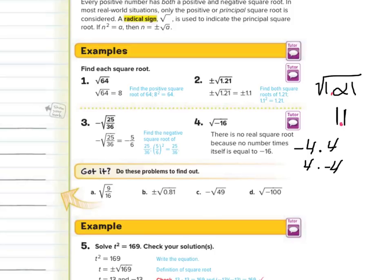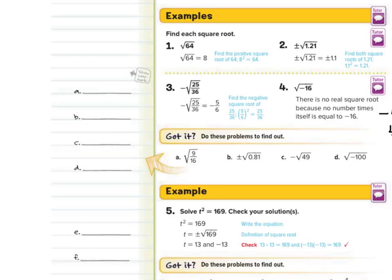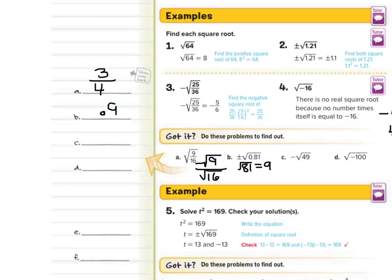Now, what about our got-it questions? We have the square root of 9 sixteenths. Let's take the square root of 9 over the square root of 16. The square root of 9 is 3, the square root of 16 is 4, so the square root of 9 sixteenths is 3 fourths. Now we have plus or minus the square root of 0.81. The square root of 81 is 9, so the square root of 0.81 is 0.9, since 0.9 times 0.9 equals 0.81. Don't forget the plus or minus in the answer. The negative square root of 49 is allowed — the square root of 49 is 7, and the negative sign makes it negative 7.